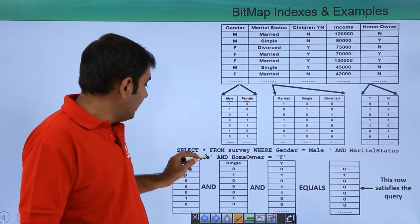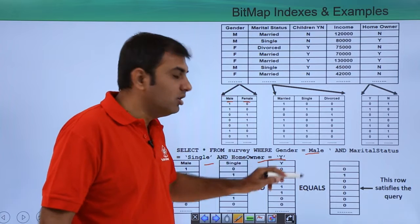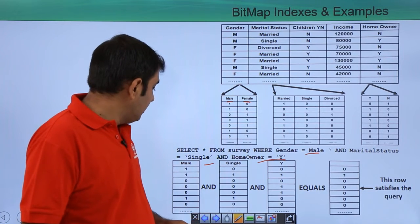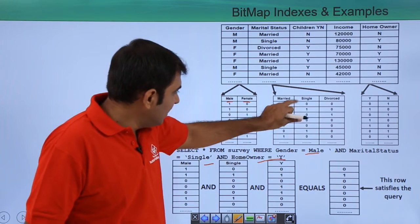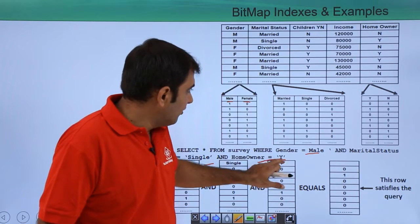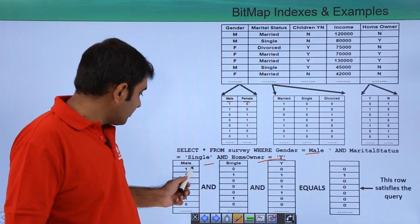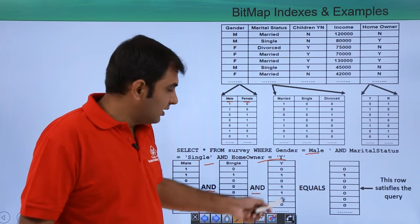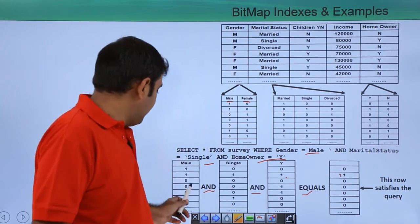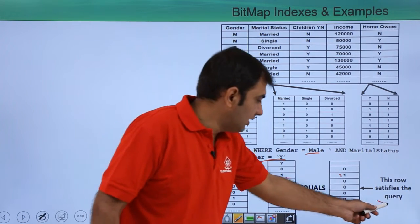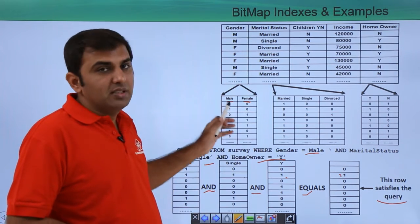If you run a query: SELECT * FROM survey WHERE gender = 'male' AND marital_status = 'single' AND home_owner = 'Y', Oracle extracts the bitmap for male, single, and home owner Y. The AND operator is applied: 1, 0, 0 gives 0; and 1, 1, 1 gives 1 — and the rest are 0. This is your satisfied query result. Whenever you create a bitmap index, Oracle internally works in this way — creating bitmaps for each value and using operators to return results.